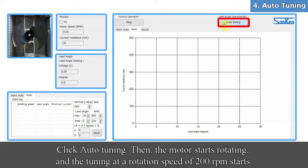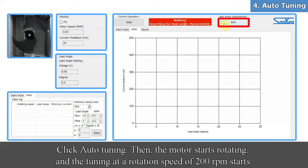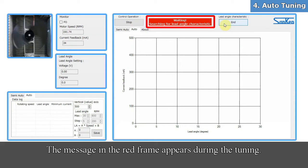Click auto-tuning. Then the motor starts rotating, and the tuning at a rotation speed of 200 RPM starts. The message in the red frame appears during the tuning.